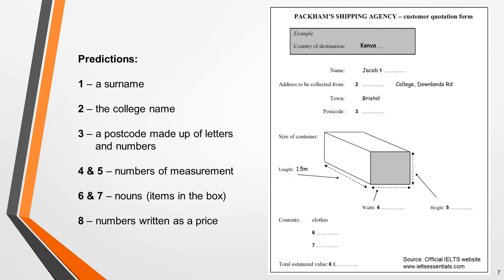four and five will be numbers of measurement, answers six and seven will be nouns, and answer eight will be numbers written as a price.